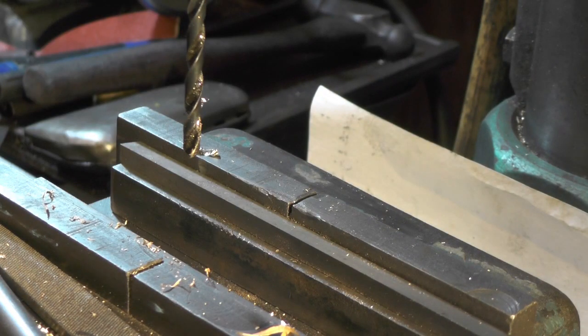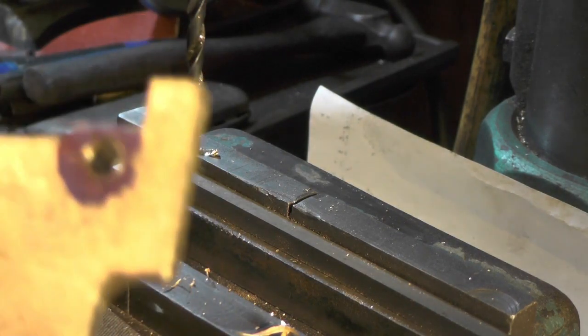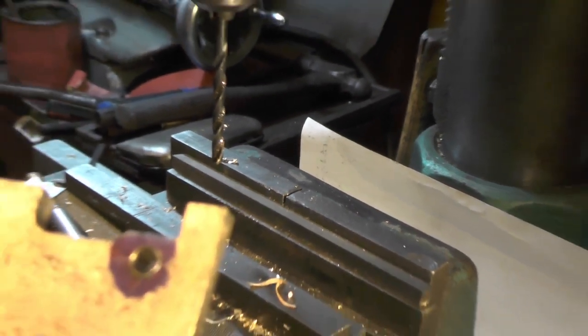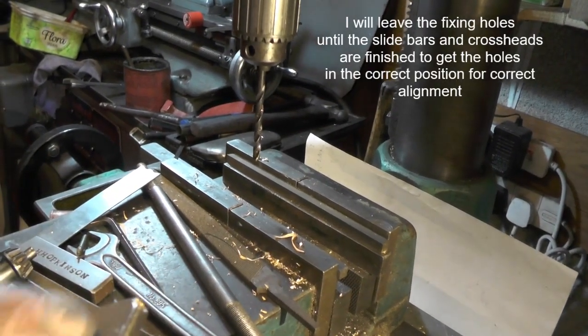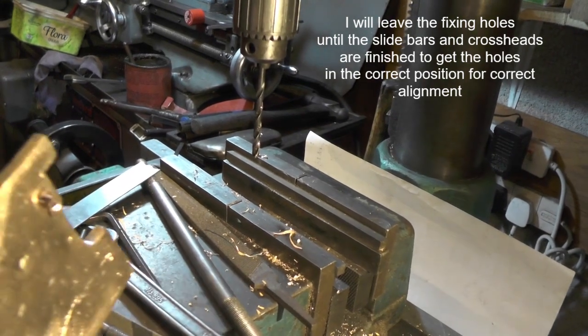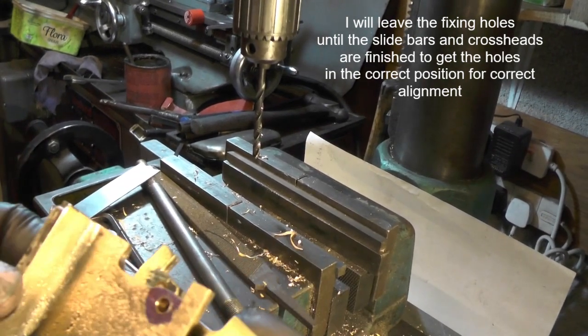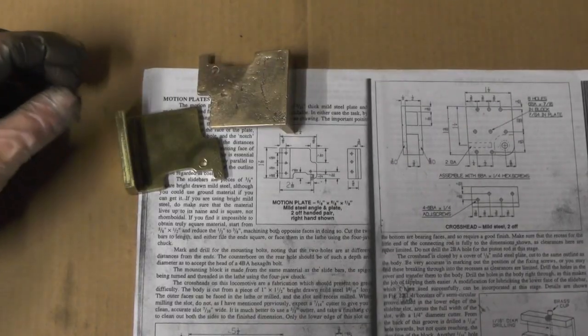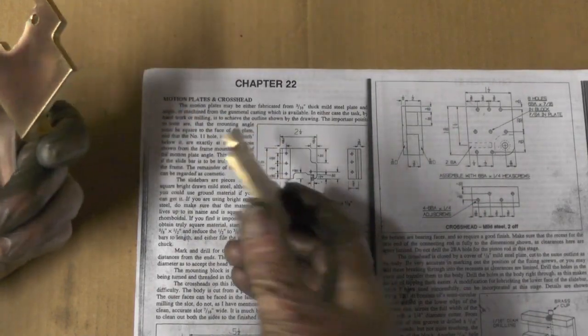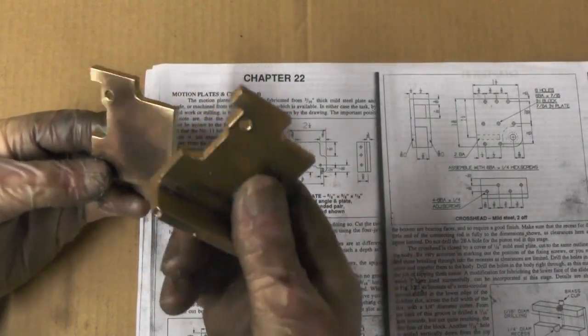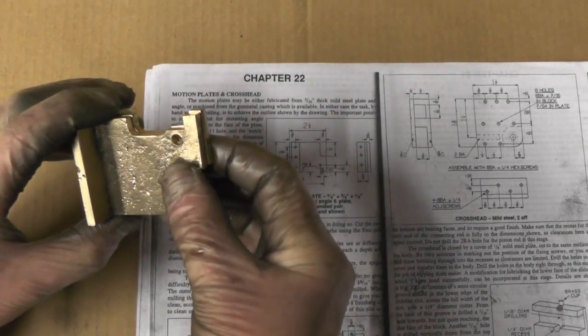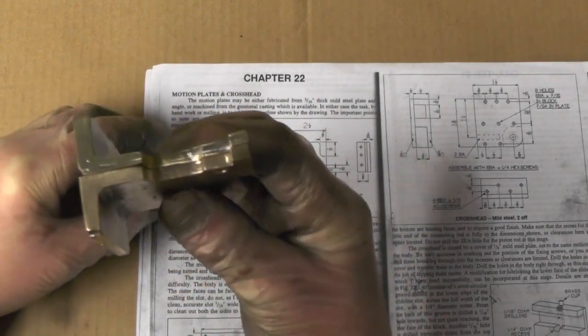I'm just going to go over to the frames now to get the position for the fixing holes that's going to fit in here. That's my motion plates finished off now - that's the one I did from the casting and that's the one I fabricated. One's a right hand, one's a left hand, like so.